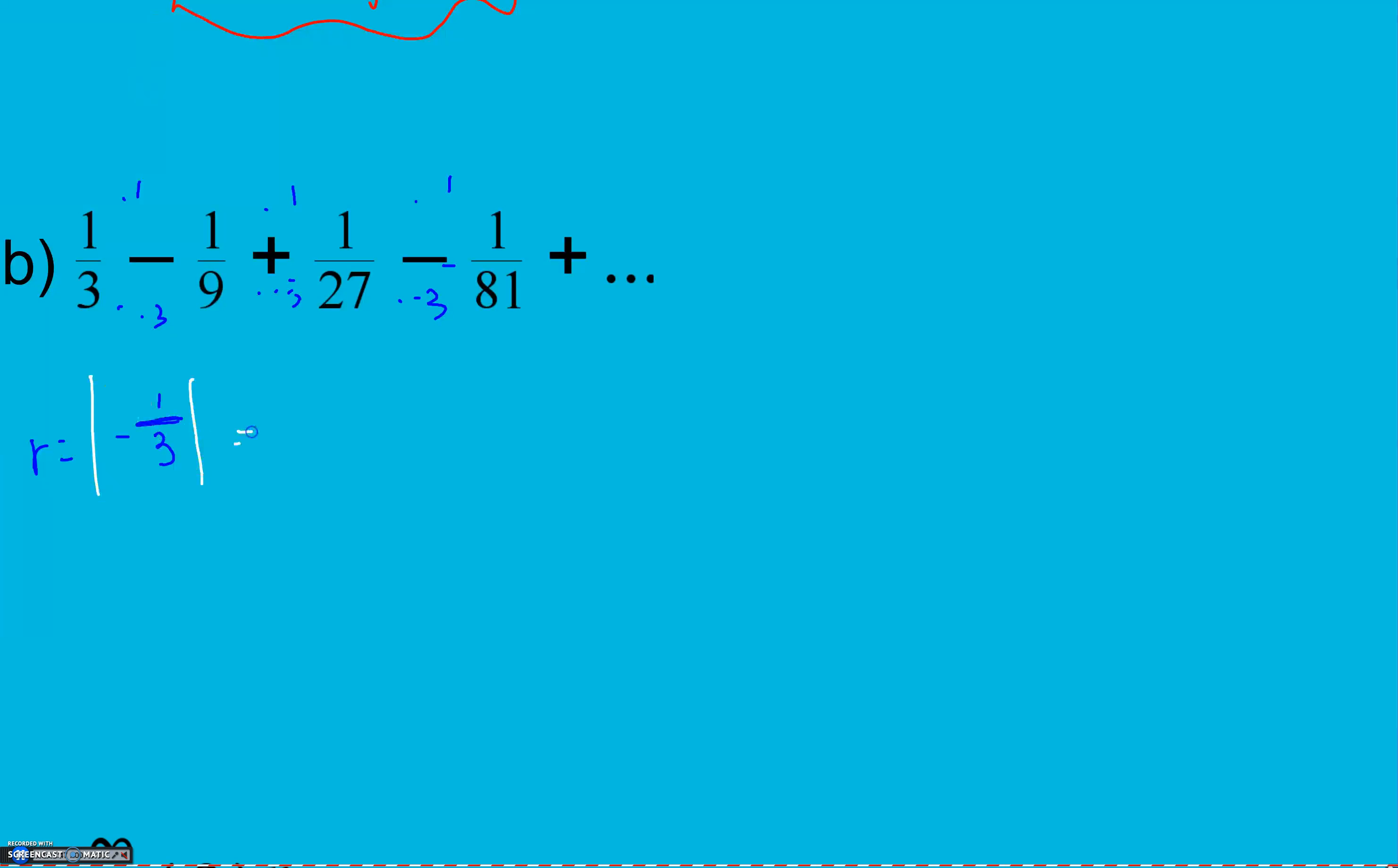Absolute value here is going to be one third, which is less than one. Which means it converges. So our sum is going to be our first value divided by one minus our common ratio. So our common ratio is negative one third, so I end up adding there. One plus a third is four thirds. And to get rid of division with fractions, I multiply by the reciprocal. Three goes to the top, four to the bottom. And I get three fourths.